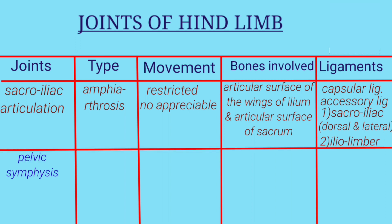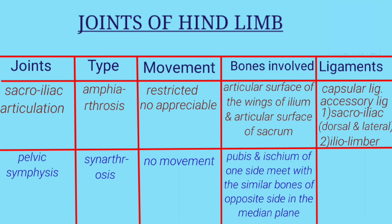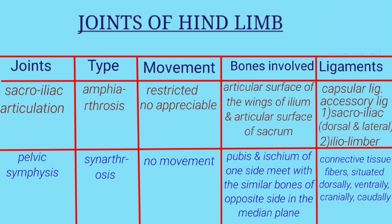Second is pelvic symphysis. The type of joint is synarthrosis and no movement is involved. Bones involved are pubis and ischium of one side meeting with the similar bone of the opposite side in the median plane. The ligament is connective tissue fibers.